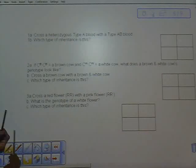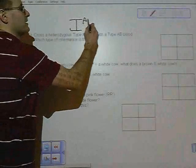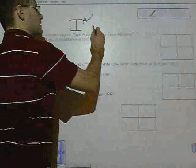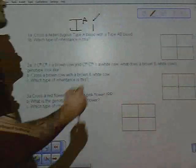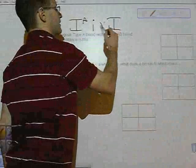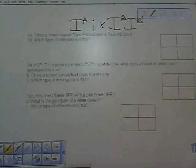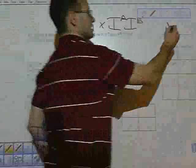But first you have to know what that means. Heterozygous type A, obviously you need the I^A, but your second allele is a little i for heterozygous. Type AB we're crossing would be I^A I^B.